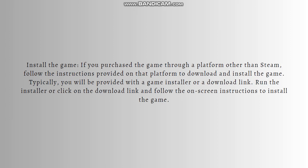Next is to install the game if you purchased it through a platform other than Steam. Follow the instructions provided on that platform to download and install the game. Typically, you will be provided with a game installer or a download link. Run the installer or click on the download link and follow the on-screen instructions to install the game.